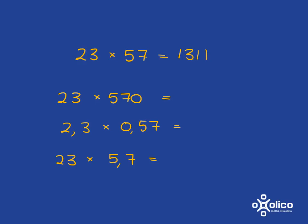Okay, hopefully the first one is easy, because what you've got here is you've got 23 multiplied by 57 multiplied by 10. So your answer is going to be 1,3,1,1,0. You've just multiplied by 10.